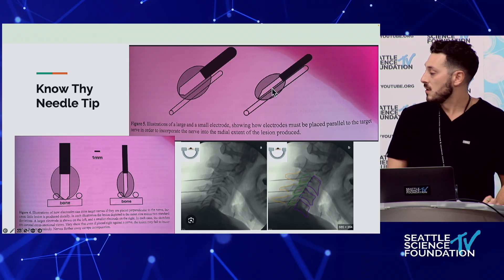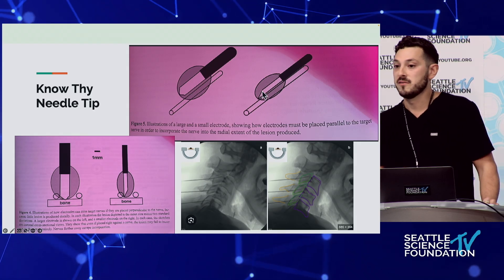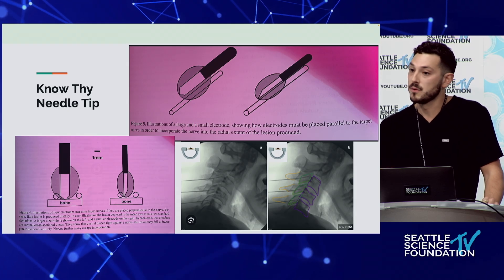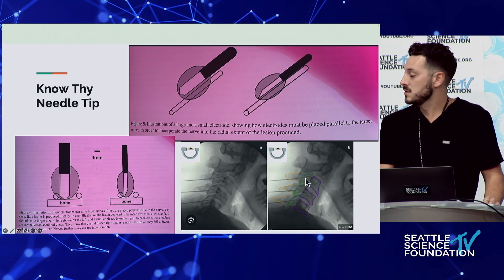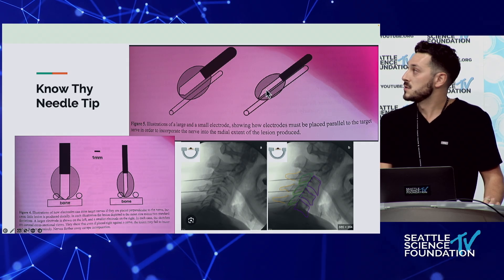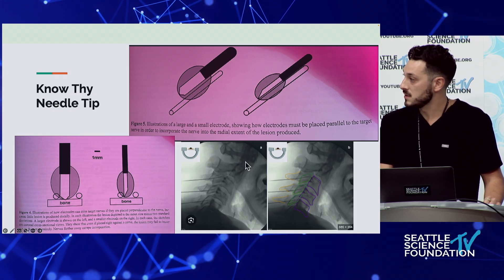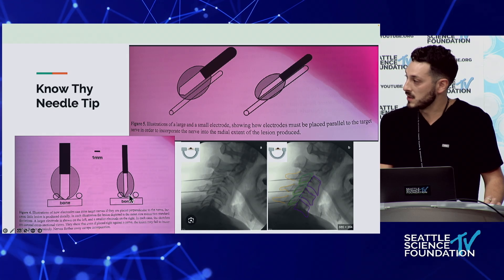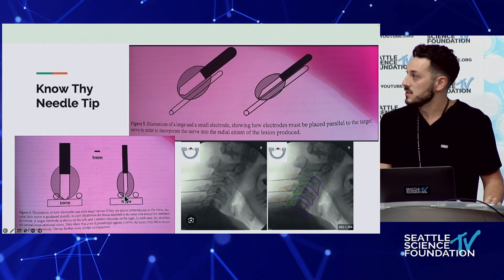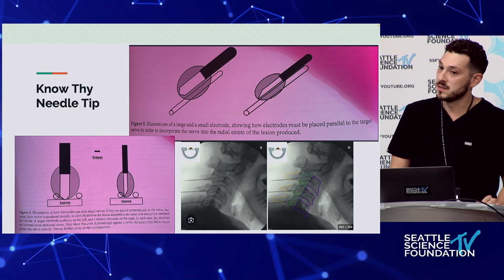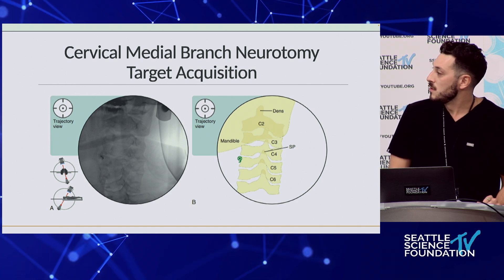Know thy needle tip. A lot of times you're just going to be getting ellipsoid burns around your RF needle, so you want parallel placement of your needle tip to cover the longest portion of the nerve possible. Generally you're going to be doing this from a posterior approach. Some people come from a lateral approach, but unless you have some sort of tip causing a projection of your burn, you're not really going to get a good lesion. Try to get parallel placement. Know what your needle tip is, know what type of burn it's going to create.